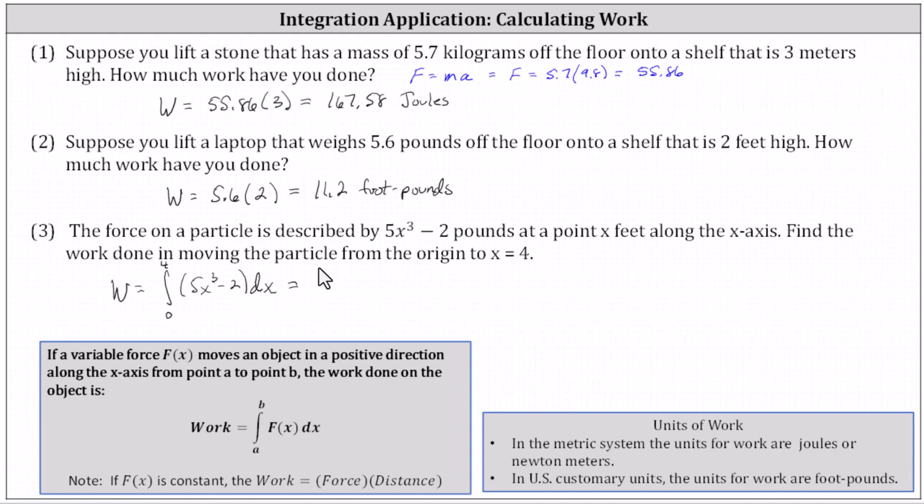Next, we determine the anti-derivative. Integrating 5x³ - 2, we have five times x to the fourth divided by four, or (5/4)x⁴ - 2x.